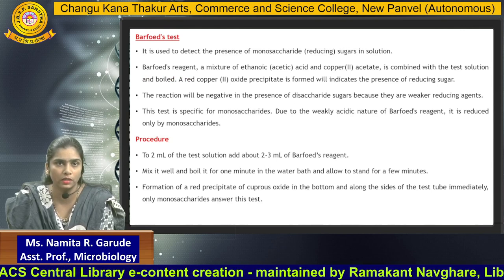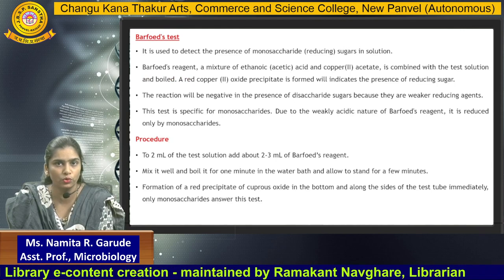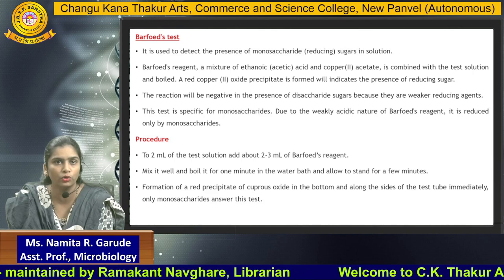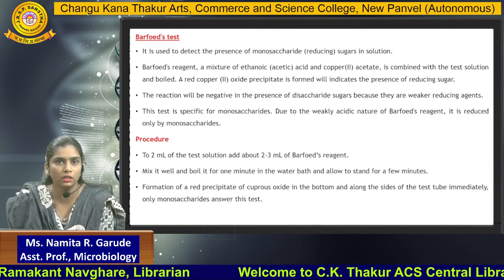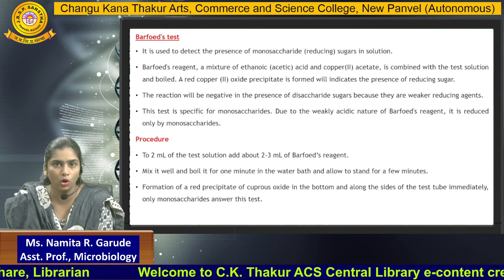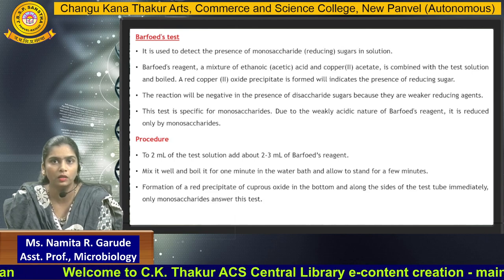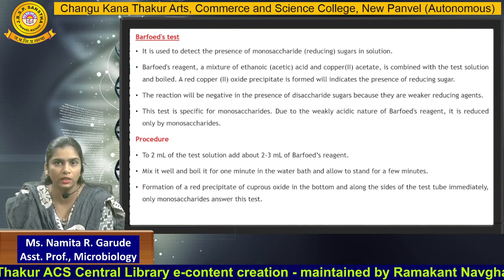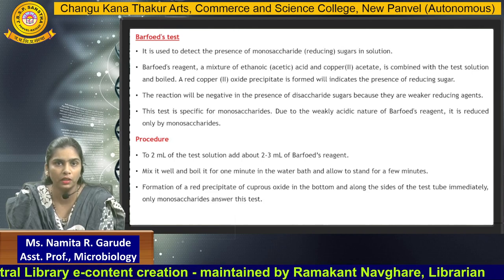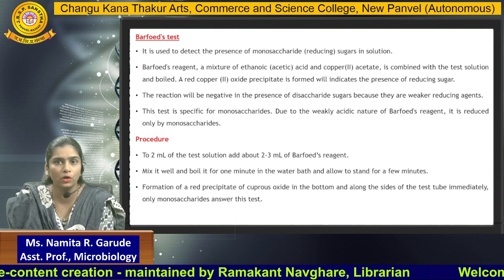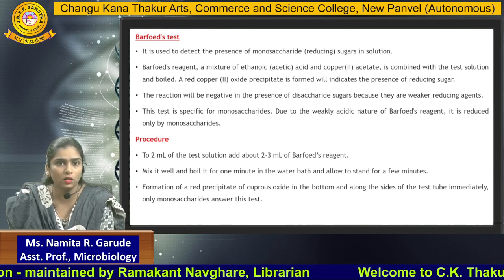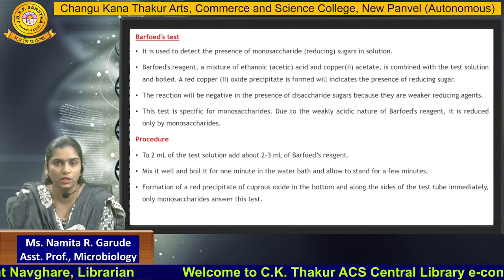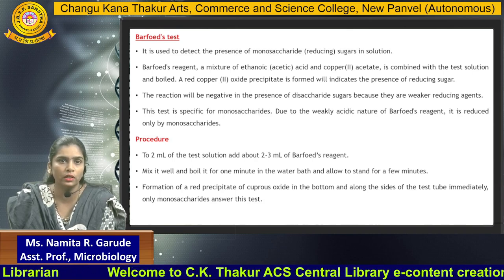Next is Barford's test. It is used to detect the presence of monosaccharides. Using Barford's test, you can distinguish between monosaccharides and disaccharides in the test sample. Barford's reagent is a mixture of ethanoic acid and copper acetate. A red copper oxide precipitate indicates the presence of reducing sugar. The reaction will be negative in the presence of disaccharides because they are weaker reducing agents. This test is specific for monosaccharides due to the weakly acidic nature of Barford's reagent; it is reduced only by monosaccharides.